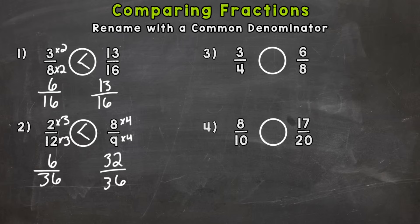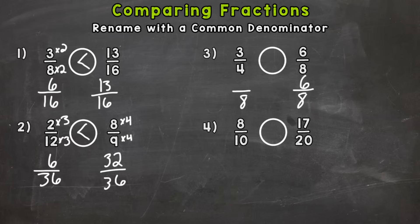For number three, both fractions are over half so we can't use the benchmark strategy here — we need to find a common denominator and rename. We have three fourths and six eighths, so the common denominator is 8. The second fraction, six eighths, already has a denominator of 8 so we leave it as is. For three fourths: 4 times 2 gives me 8, so do the same to the top — 3 times 2 gives me 6. Both sides are equivalent to six eighths, so three fourths is equal to six eighths.